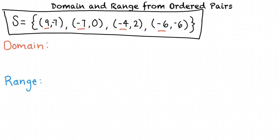The range of a relation is the set of all second elements in the ordered pairs. For this example, the range would be -7, 0, 2, and -6.